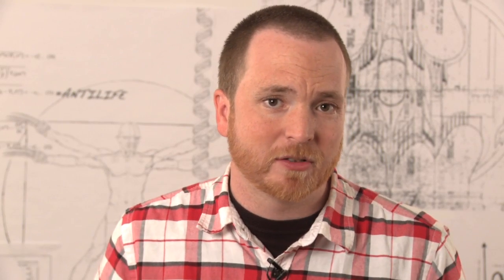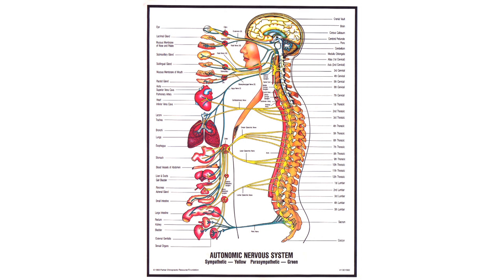We all have electricity constantly coursing through us. Our cells create and use electricity to maintain themselves, and our central nervous system uses electricity to communicate with the rest of our body. The electricity our body produces is much like the electricity created by a generator or a battery.